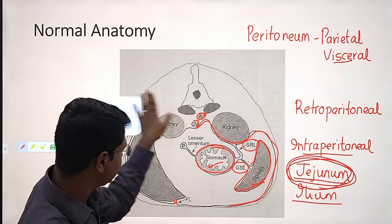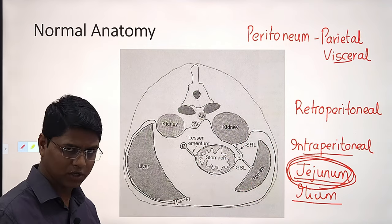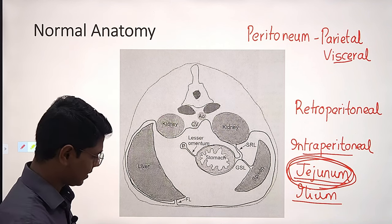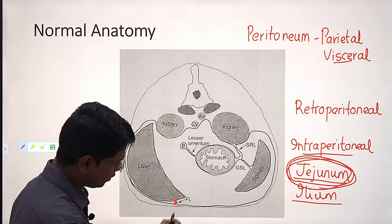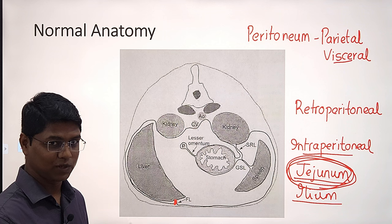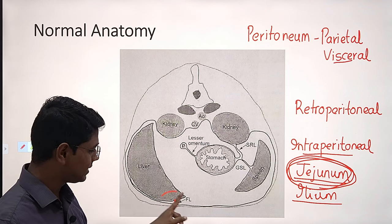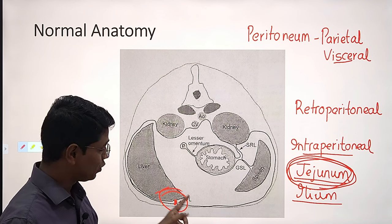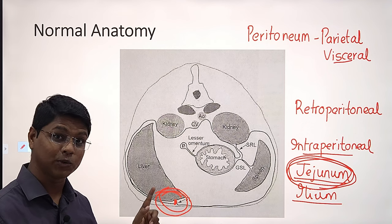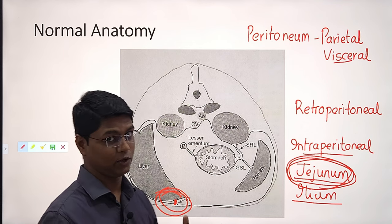Between these folds there are ligaments or mesentery. Mesentery is also a double membrane peritoneal layer. If something, like fat, lies between these folds, they are also retroperitoneal — not inside the peritoneal cavity. Especially in cats, you will find the falciform fat. Mesenteric fat and mesenteric lymph nodes — between those folds you will find lymph nodes. They are also retroperitoneal.